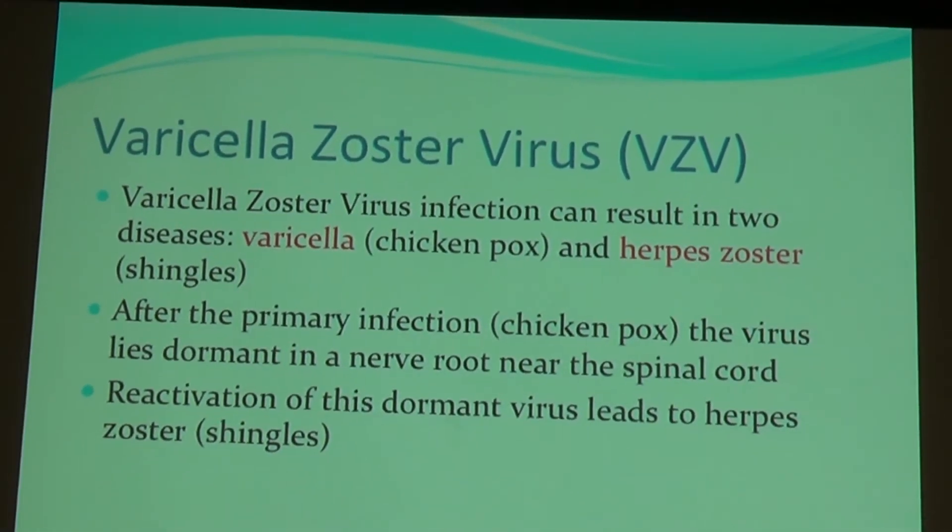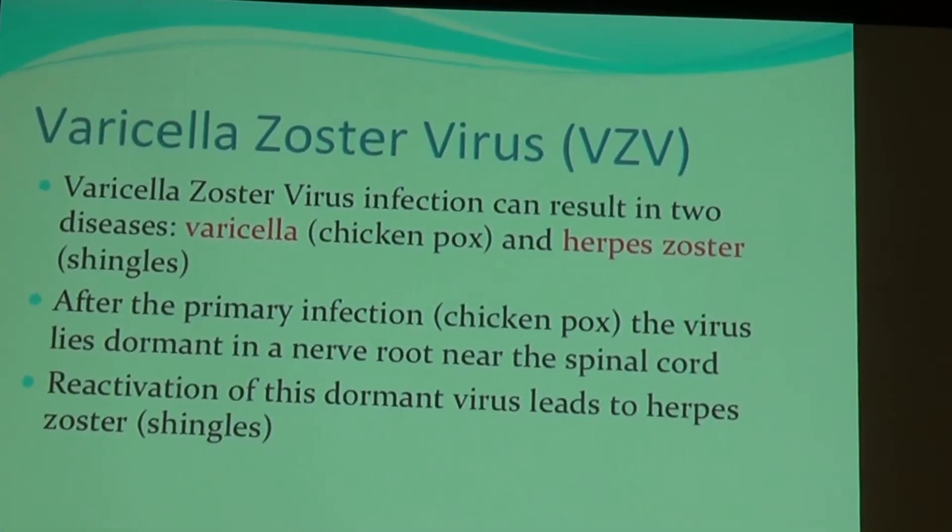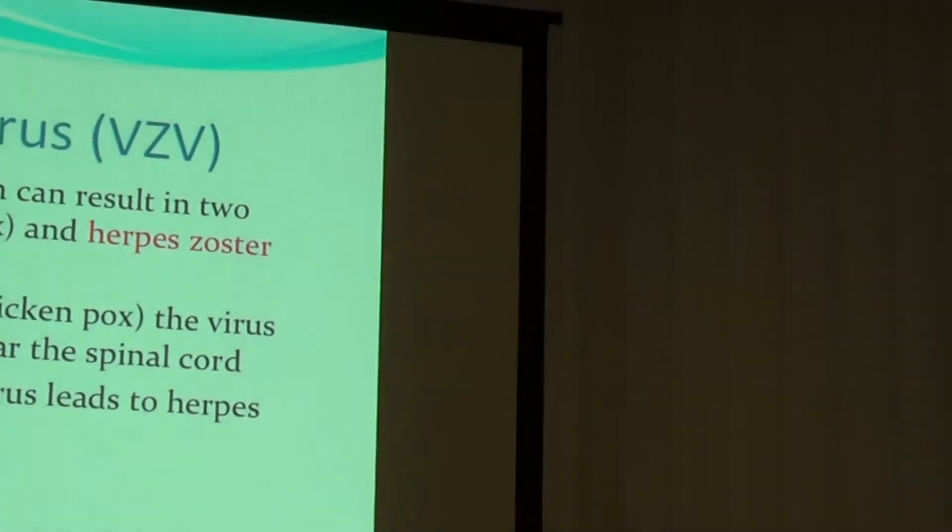Varicella zoster virus is an infection that can lead to two different distinct diseases: varicella, better known as chicken pox, which is usually a childhood disease, and herpes zoster, also known as shingles — both caused by the same virus. After the primary infection or chicken pox, the virus lies dormant in a nerve root near the spinal cord. Reactivation of this dormant virus can lead to herpes zoster or shingles. The virus can be hiding in your body for 30, 40, 50, or 60 years and reappear as an adult, possibly causing shingles.